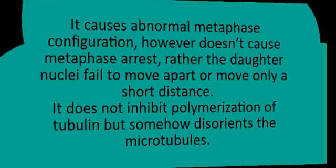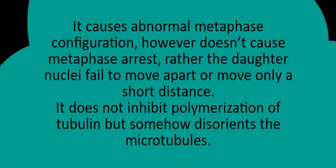Griseofulvin is fungistatic in nature. It interferes with mitosis — multinucleated and stunted fungal hyphae result from its action. It causes abnormal metaphase configuration; however, it does not cause metaphase arrest. Rather, the daughter nuclei fail to move apart or move only a short distance. It does not inhibit polymerization of tubulin but somehow disorients the microtubules.